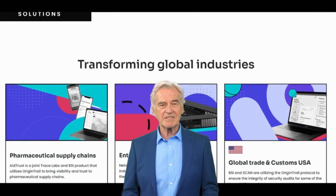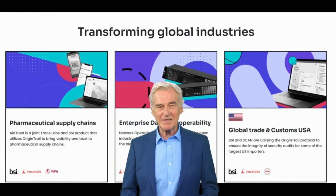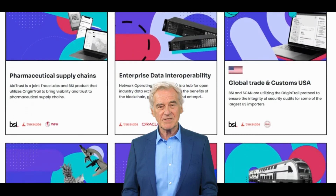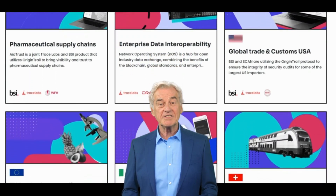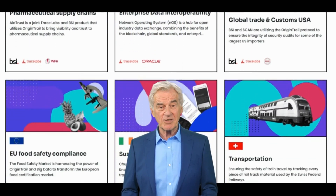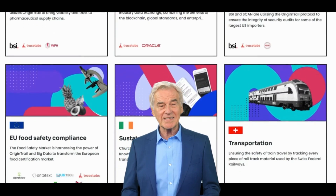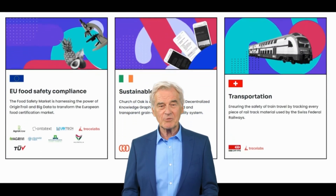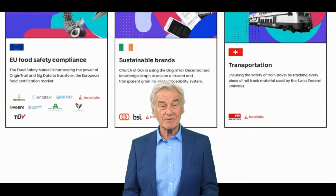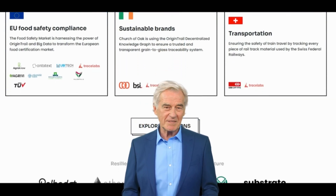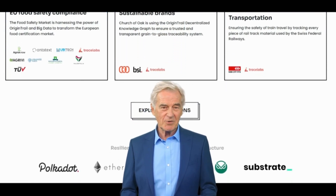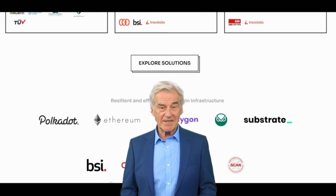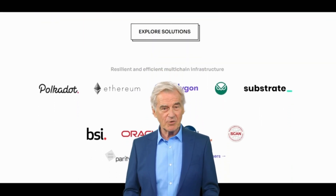Stakeholders include suppliers, manufacturers, distributors, and retailers. The TRAC token is the native cryptocurrency of the OriginTrail network and is used to incentivize network participants to provide accurate and timely data about supply chain activities. The token is also used to pay for data storage and other services on the network.